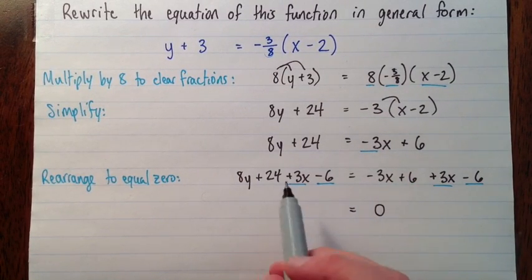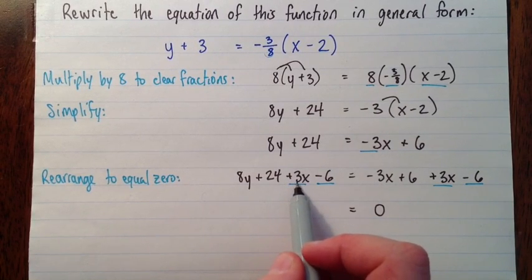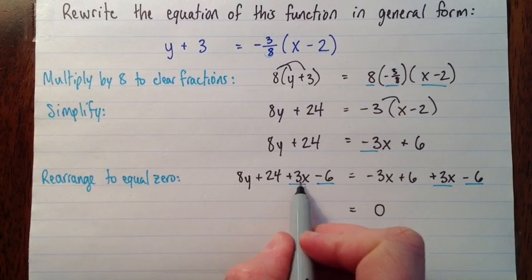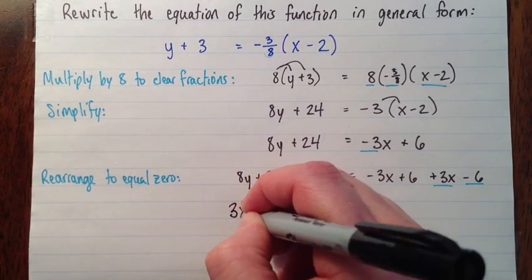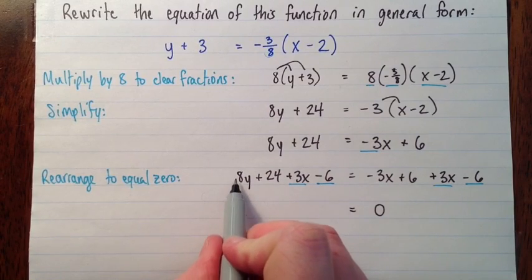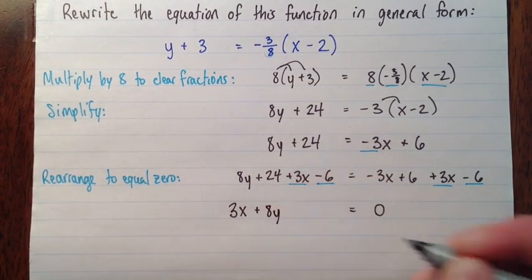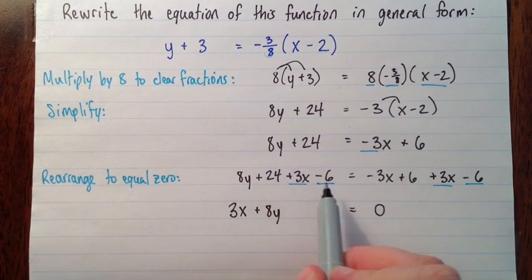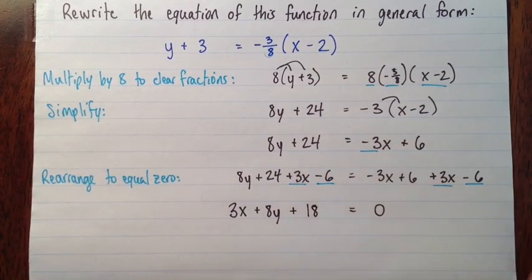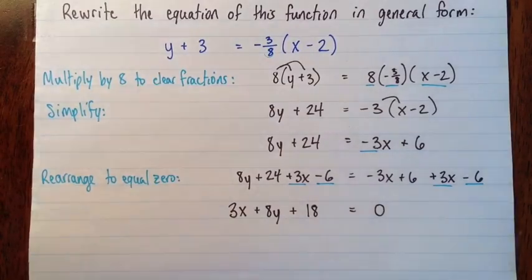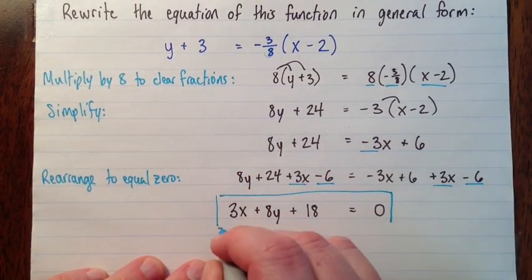And I'm going to simplify here. And while I simplify, I need my x term to be first for general form. So I'll just do that in one step. I'll put my x term first. First it's positive 3x, so 3x. And then we've got positive 8y, so it's plus 8y. And then we have 24 minus 6, so that's going to be plus 18. And that right there is general form.